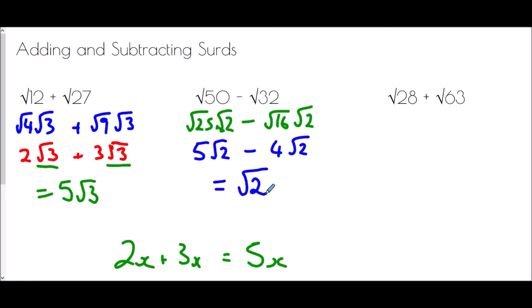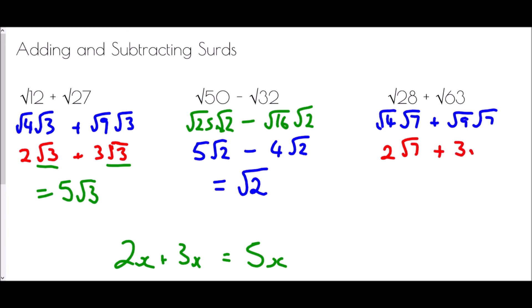And then root 28 plus root 63. The largest square number that goes into 28 is 4, so it's root 4 times root 7. The largest square number that goes into 63 is 9, giving root 9 times root 7. The square root of 4 is 2, so that's 2 root 7. And the square root of 9 is 3, so that's 3 root 7. Add them together: 2 of them plus 3 of them gives 5 root 7.